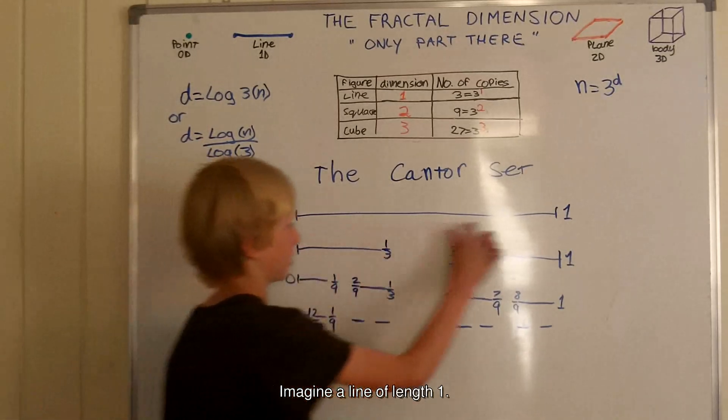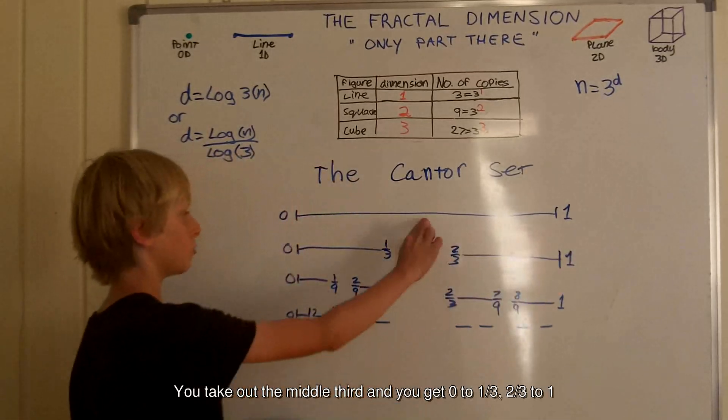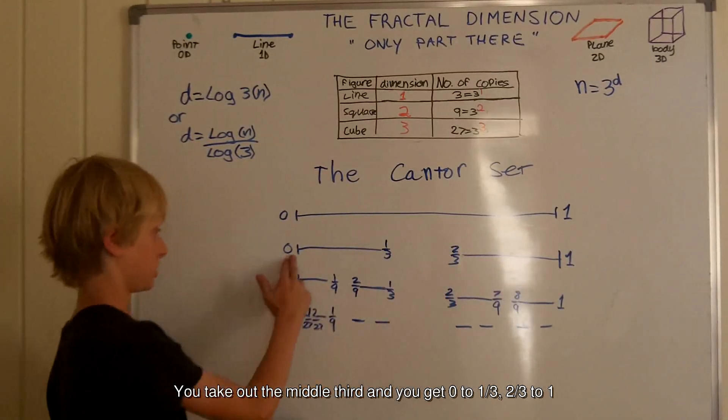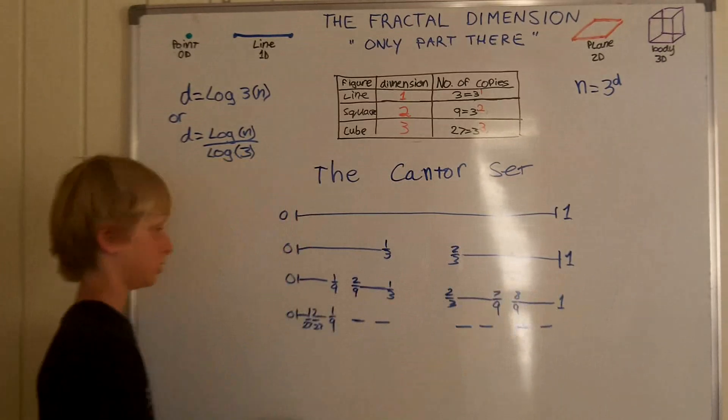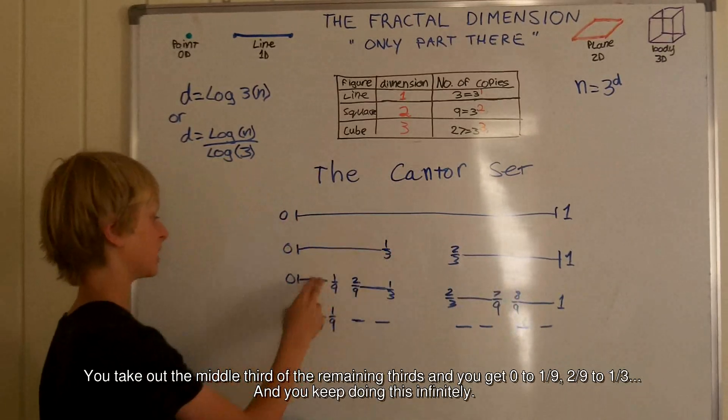Imagine a line of length 1. You take out the middle third, and you get 0 to 1 third, 2 thirds to 1. You take out the middle third of the remaining thirds.